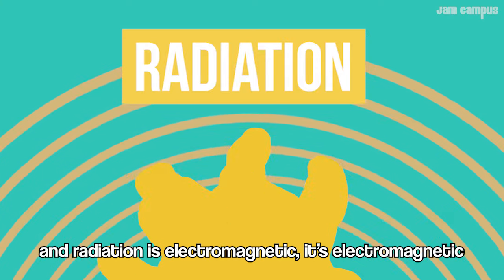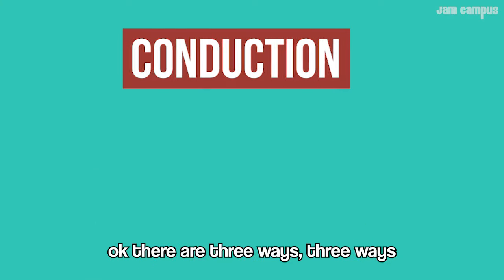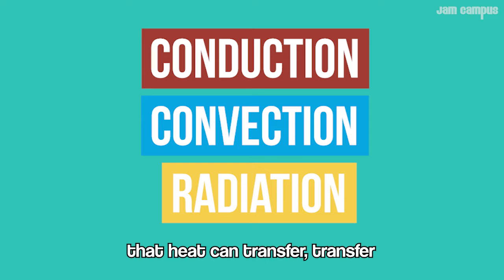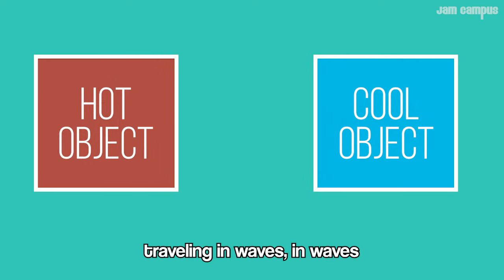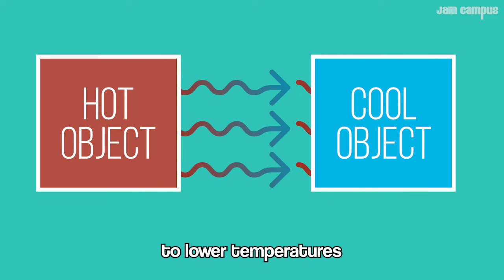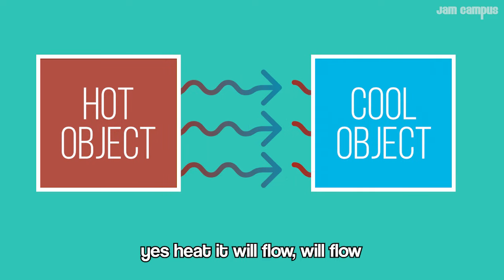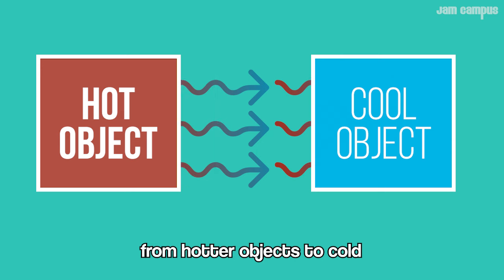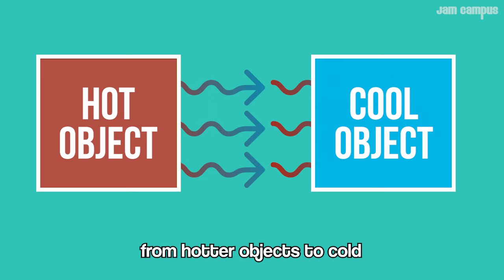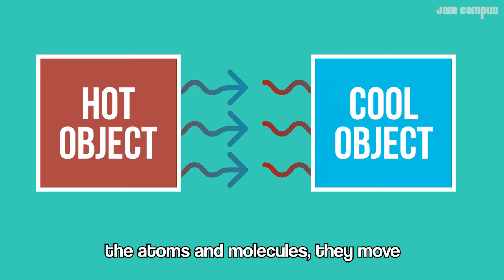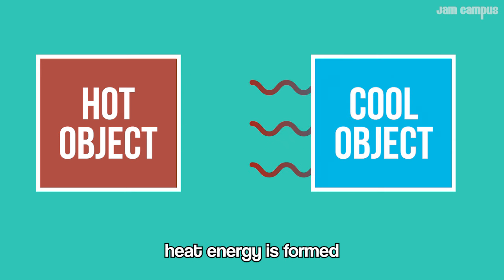That's three ways, three ways that heat can transfer — traveling in waves, to lower temperatures. Heat will flow from hotter objects to cold; the atoms and molecules they move.